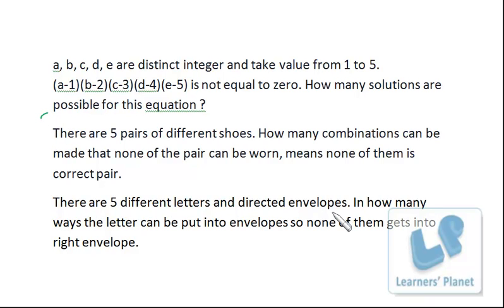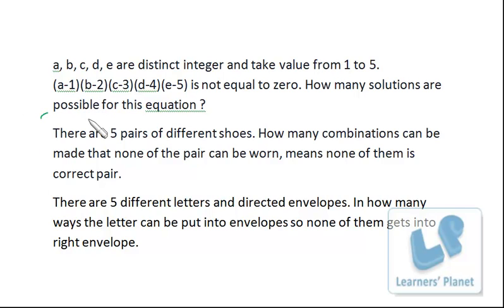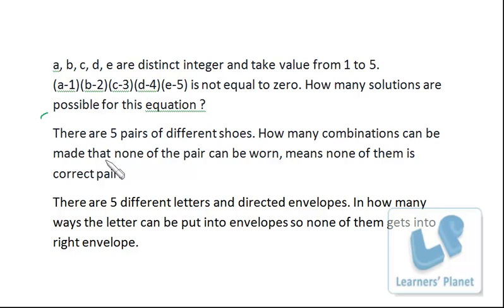You might have done this classic question: there are five different letters and directed envelopes — in how many ways can the letters be put into envelopes so that none of them gets into the right envelope? This concept is taught in basic permutation and combination sessions. Also consider: there are five pairs of different shoes — how many combinations can be made such that none of the pairs can be correctly worn? All three problems are actually the same concept.